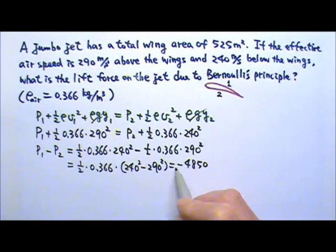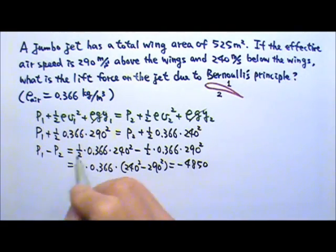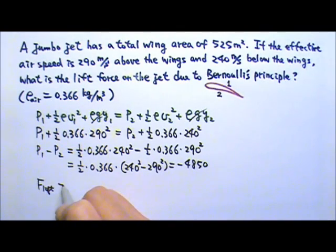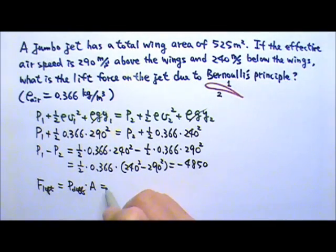It is negative but it's okay because to find the lift force, we just have to use the pressure difference times the area. And I'm just going to drop the sign and use the amount of pressure difference which is 4850 times the wing area.